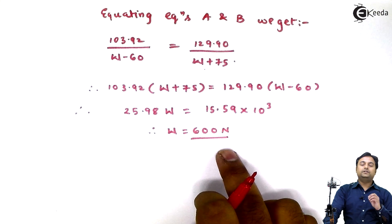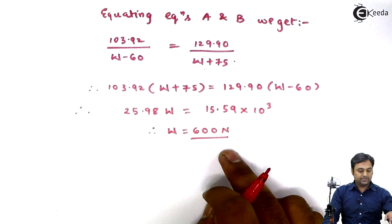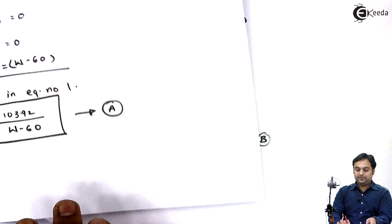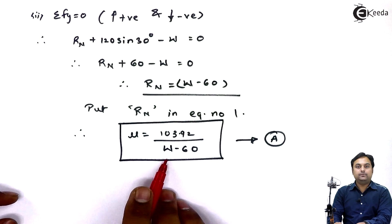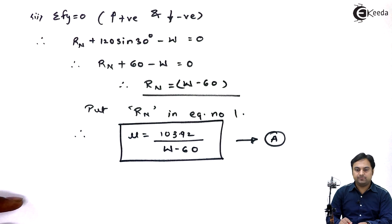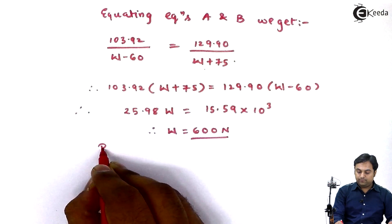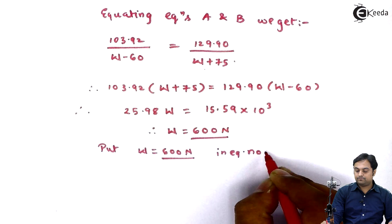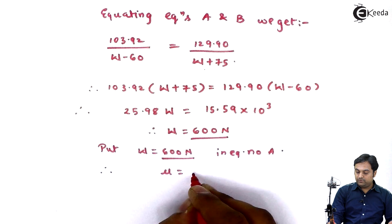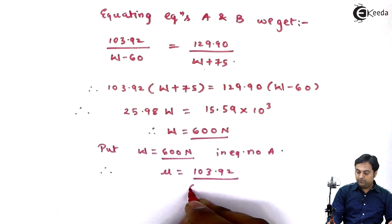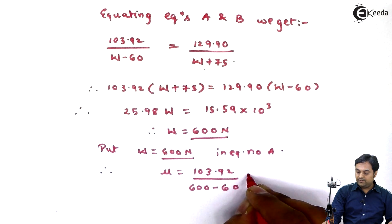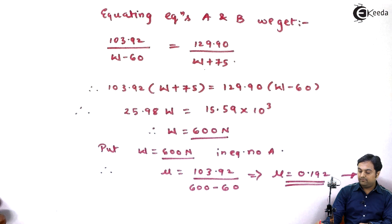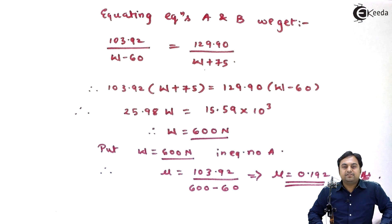We found W, but the question asks for the coefficient of friction. In Equation A, mu is expressed in terms of W. Substituting W = 600 Newton into Equation A: mu = 103.92 divided by (600 minus 60) = 103.92 divided by 540, giving mu = 0.192. The coefficient of friction has been calculated from both conditions and the question is complete.